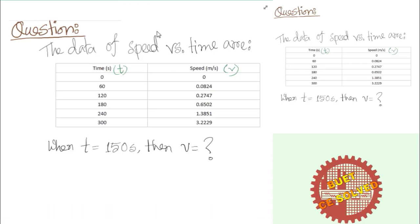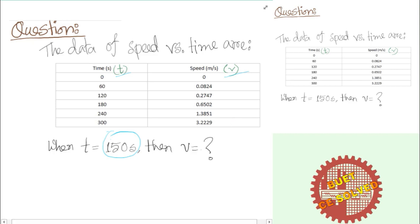The question here is data of speed versus time. The data is given, and we need to find the speed at T equals 150 seconds. At zero seconds to 300 seconds, the speed is in meters per second. So we need to find the value at 150 seconds.